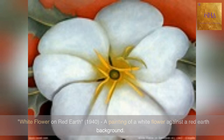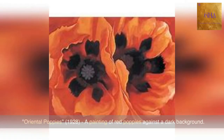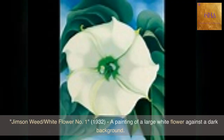A painting of a white flower against a red earth background. Calla Lilies on Red, 1928 — a painting of white calla lilies against a red background. Oriental Poppies, 1928 — a painting of red poppies against a dark background. Jimson Weed, White Flower No. 1, 1932.